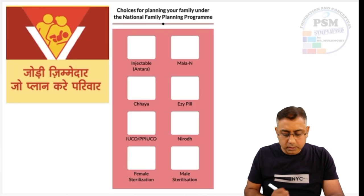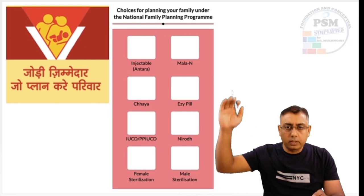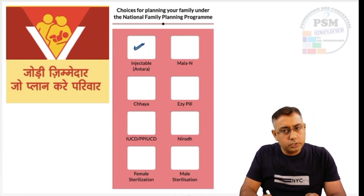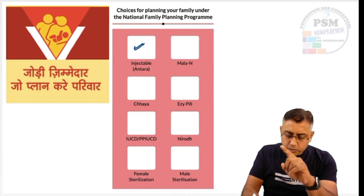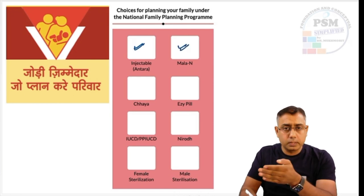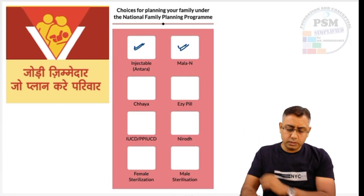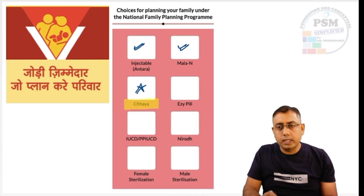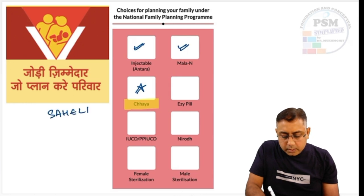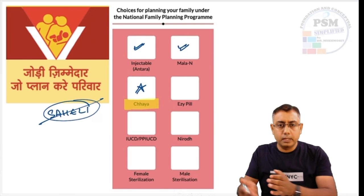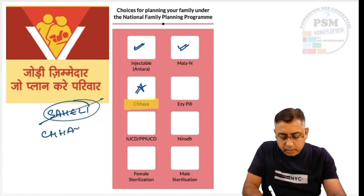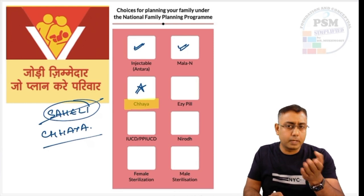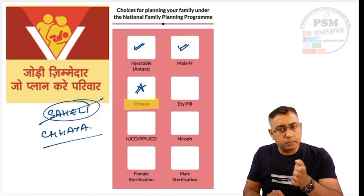Let us talk about newer contraceptive choices. We are giving injectable Antras under the Ministry of Health and Family Welfare. We are also giving Mala N tablets, which are oral contraceptive pills. Then there is the Chaya tablet — a potential MCQ. Chaya is a new name for Saheli. Chaya contains Centchroman, and the chemical name is Ormeloxifene. The mechanism of action of Centchroman is that it is a selective estrogen receptor modulator.